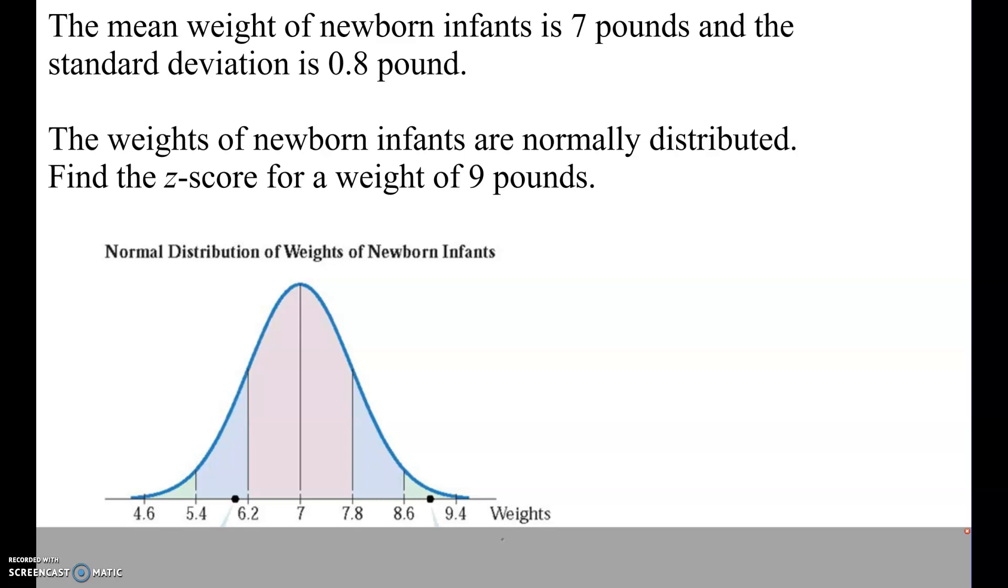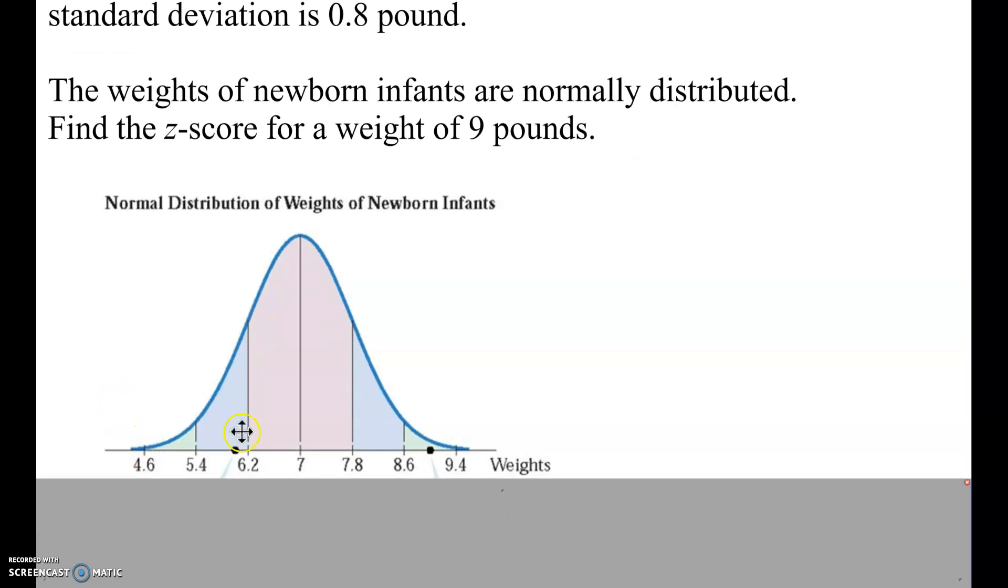Let's first look at the graph. We have our normal distribution modeled here, our bell curve. In the middle, I'm going to put the mean, which is 7, and then below and above that, to the left and to the right, we have the standard deviations. It's 0.8 pounds, so we'll subtract 0.8 or add 0.8 to get one standard deviation. Everything in pink here is within one standard deviation of the mean.